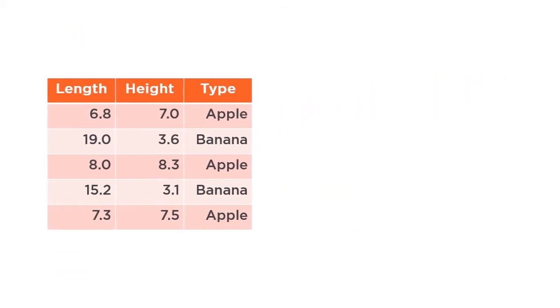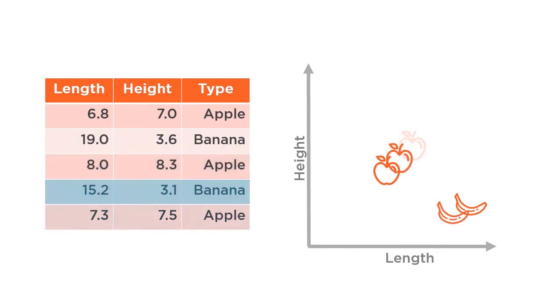Next, we would feed these data into a machine learning training algorithm. The algorithm would inspect each row of data containing the length, height, and type of fruit. The algorithm would learn how length and height correlate with each type of fruit. Apples are more round, and bananas are more elongated. The machine learning training algorithm captures this statistical relationship as a mathematical model.